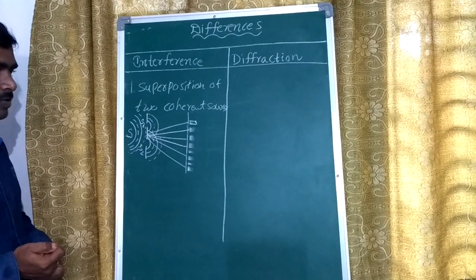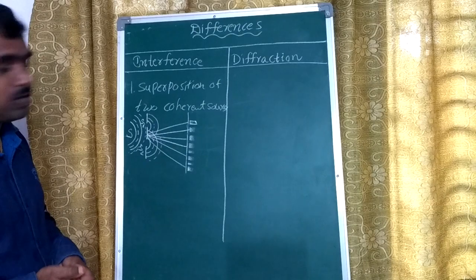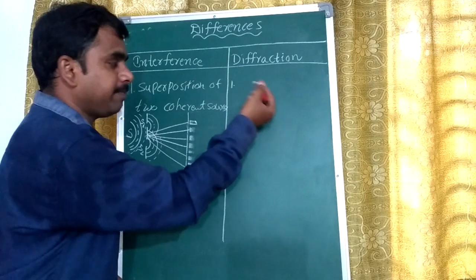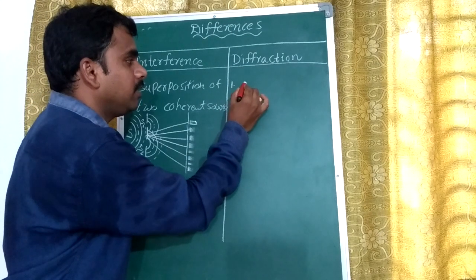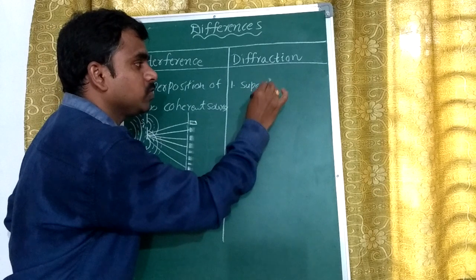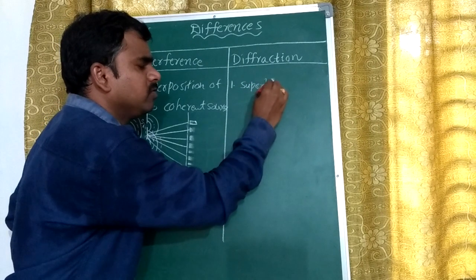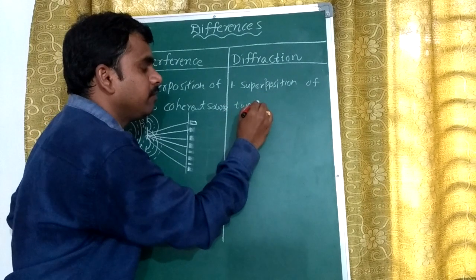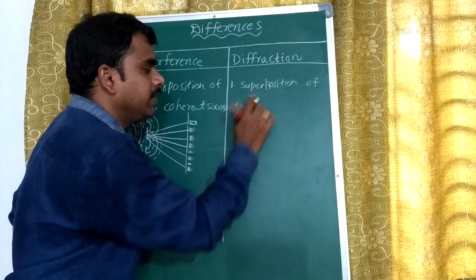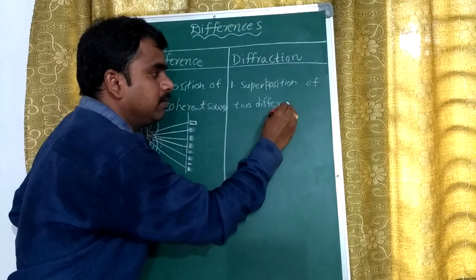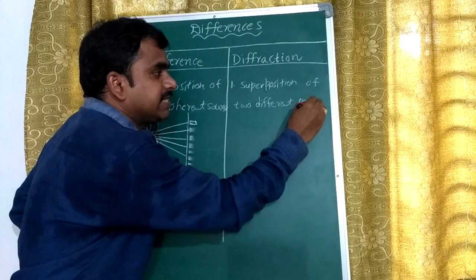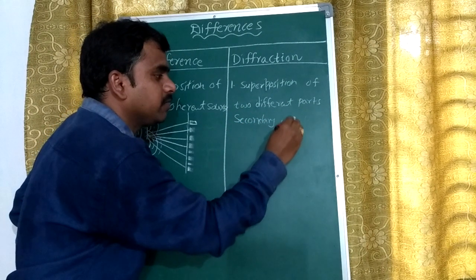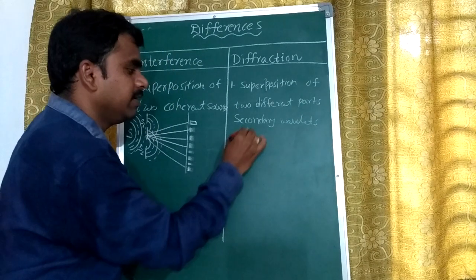Interference is superposition originating from two coherent sources. But if we take diffraction, it happens due to the superposition of different parts of secondary wavelets. Due to that, this diffraction takes place.